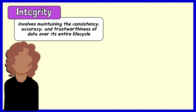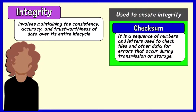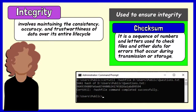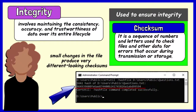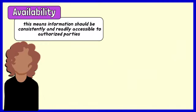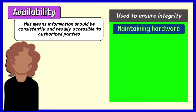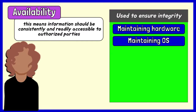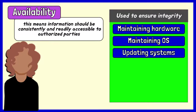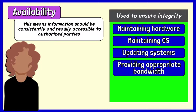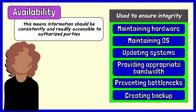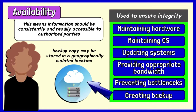Steps must be taken to ensure that data cannot be altered by unauthorized people. One of the steps is to include a checksum for verification of integrity. A checksum is a sequence of numbers and letters used to check files and other data for errors that occur during transmission or storage. If you know the checksum of an original file, you can use a checksum utility to confirm your copy is identical. Remember that small changes in the file produce very different looking checksums. Availability means information should be consistently and readily accessible to authorized parties. This is best ensured by regularly maintaining all hardware, maintaining a properly functioning operating system environment that is free of software conflicts, keeping current with all necessary system upgrades, providing adequate communication bandwidth, and preventing the occurrence of bottlenecks. To prevent data loss from natural disasters, a backup copy may be stored in a geographically isolated location.